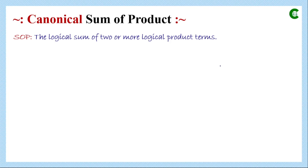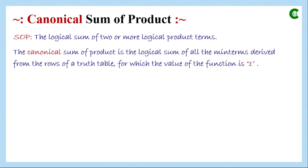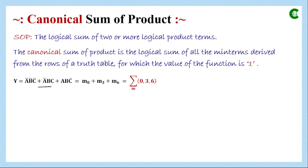First we will review canonical sum of product. SOP means sum of product — it is the logical sum of two or more logical product terms, where logical sum means OR operation and logical product means AND operation. Canonical sum of product is the logical sum of all the minterms derived from the rows of a truth table for which the value of the function is one. This is an example where Y is the logical function with three variables A, B, and C, and in each minterm we have all those variables.